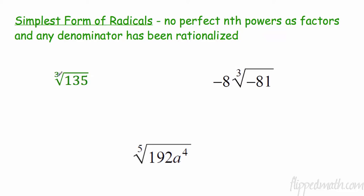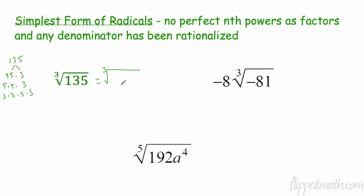Let's take the third root of 135. I'm going to do a prime factorization. I know that 45 times 3 is 135. I know that 45 is 9 times 5 times 3. I like to write the whole thing out every time so I don't get lost. Nine is 3 times 3, so I have 3 times 3 times 5 times 3, and if you multiply those together you get 135.